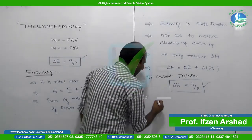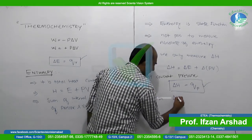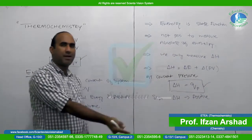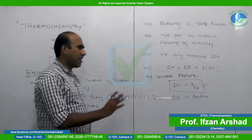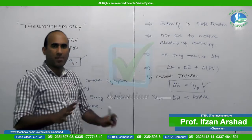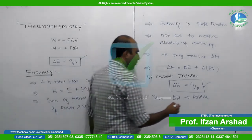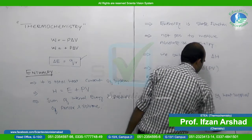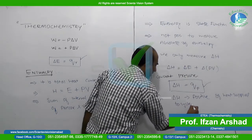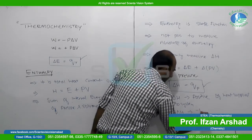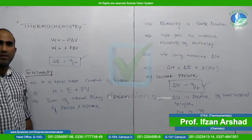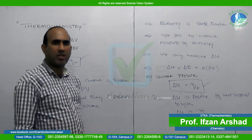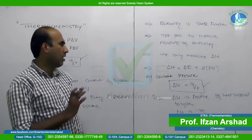Now, regarding the sign of enthalpy: if heat is supplied to the system at constant pressure, delta H is positive. If heat is released from the system to the surroundings at constant pressure, then delta H is negative.